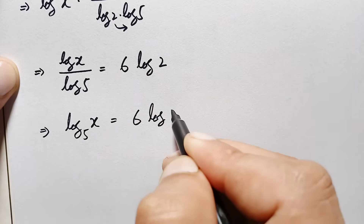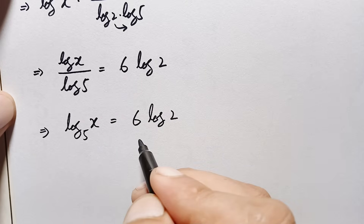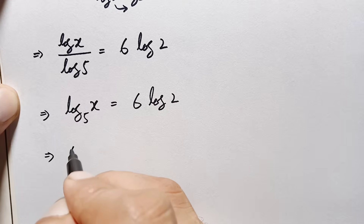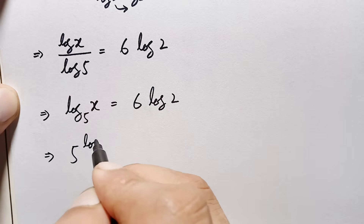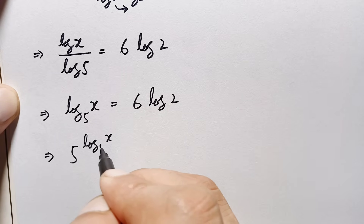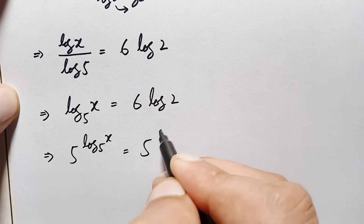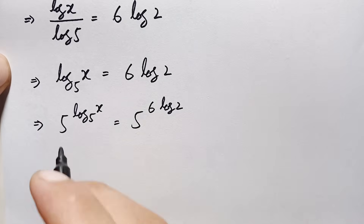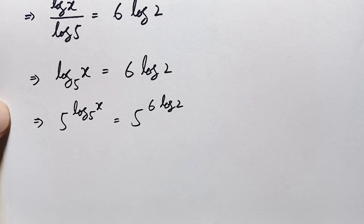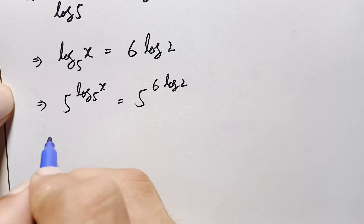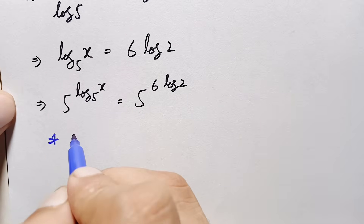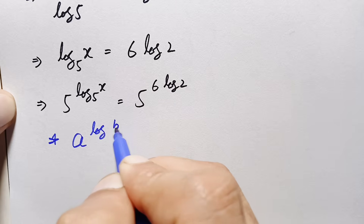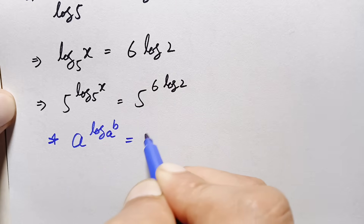Now we will take 5 as the base on both sides. This equation becomes: 5 raised to the power log of x with base 5 is equal to 5 raised to the power 6 times log of 2. In the left hand side we will use the logarithm identity: a raised to the power log of b with base a equals b.